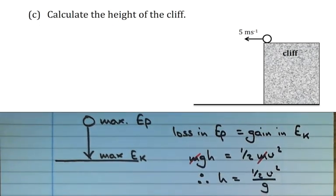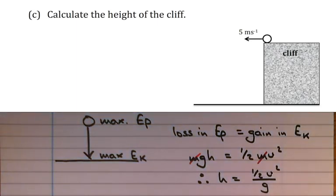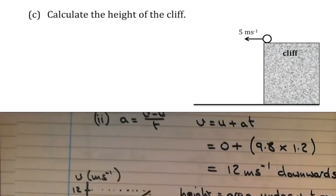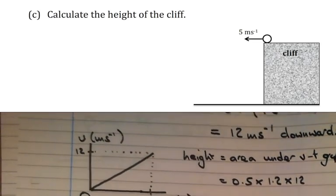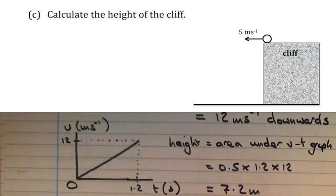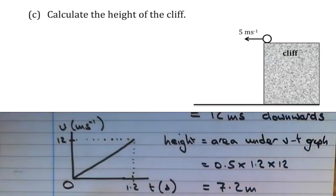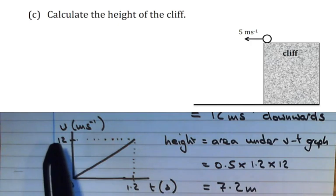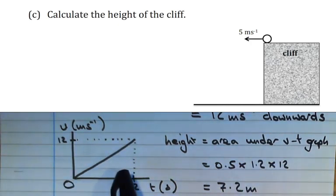That last method is a bit more tricky. The method I would find simplest is working out the area under the velocity-time graph — the velocity going from zero to 12 meters per second in 1.2 seconds. As I said, there are more than just one way to work it out, but the area under the graph is the approach I'd use myself.